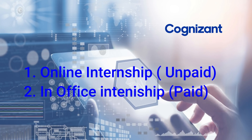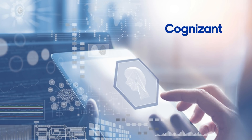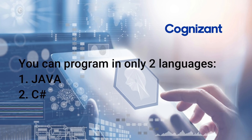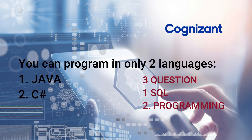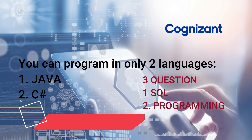In the problem-solving section, you will be given two options — Java and C# — to solve the questions. On the basis of your score in these tests, you will be assigned different domains. There are basically three questions in SQL and three in programming. If you solve above 80%, there are high chances that you will be getting the domain of AI, data warehousing, or IoT.